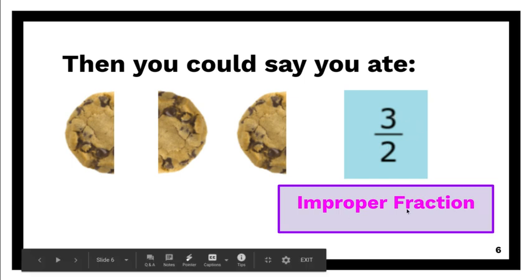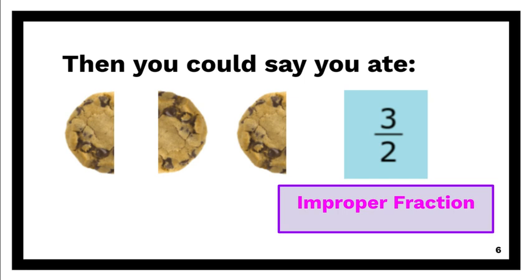What's unusual about an improper fraction is that the numerator, the number on the top, is bigger than the denominator, the number on the bottom. So far, we've really only looked at fractions where the numerator is smaller than the denominator. So when you see that, that's called an improper fraction, and it means that you have more than one whole.